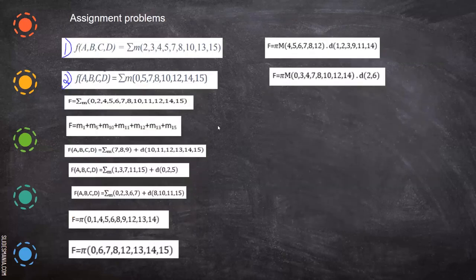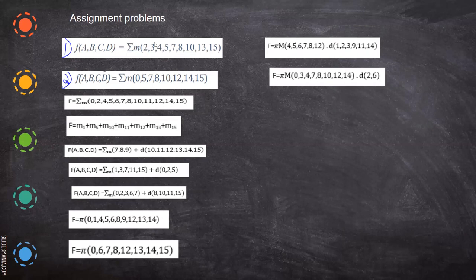These are all the assignment problems which are given. If you can identify whether it is a sum of products or product of sums, you draw the K-map for all these problems, reduce the expressions, and we also have to draw the circuit diagram. I will tell you about drawing the circuit diagram later. For now, try to form the K-map for these expressions.